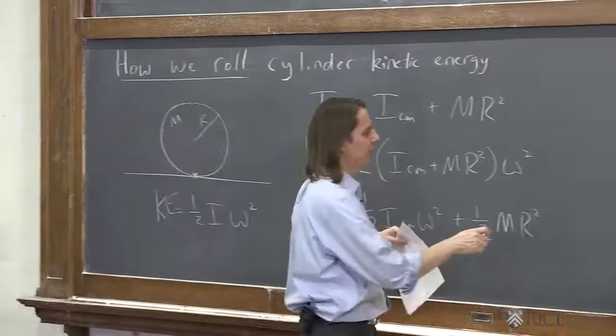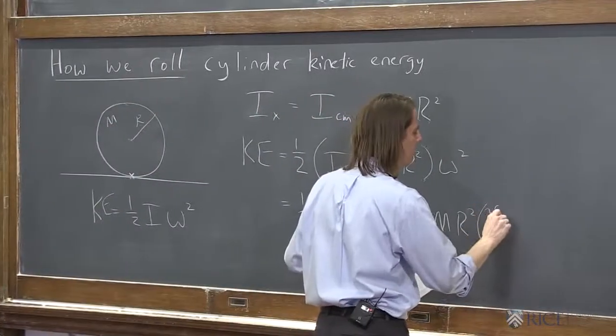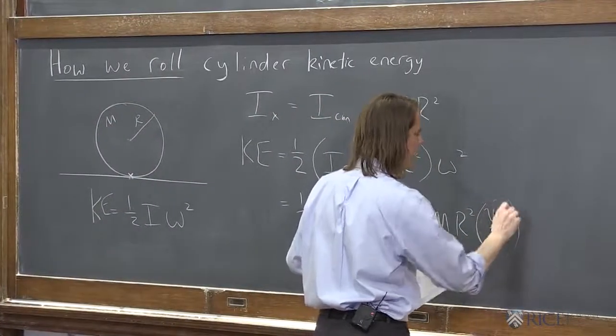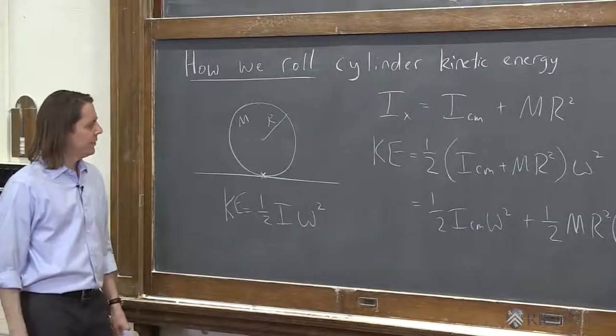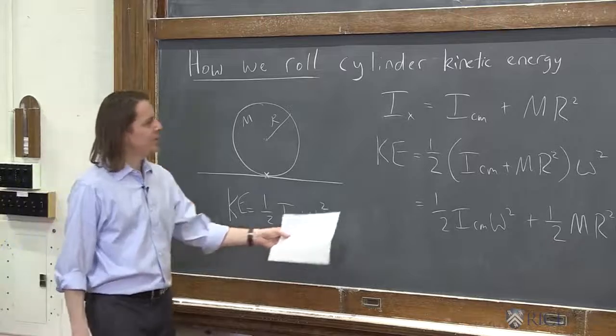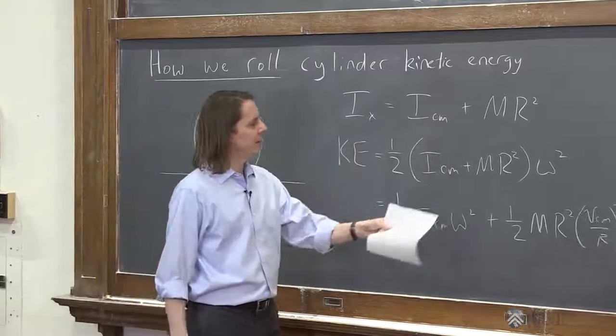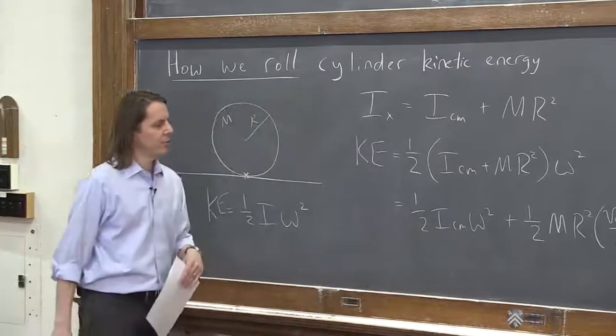Right, ω is velocity of the center of mass over r squared. Okay, so let's see. What have we done? We said it's 1/2 I ω². There's I. We plugged it in, and now we're going to do something with these two terms.